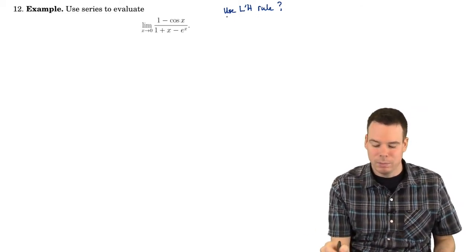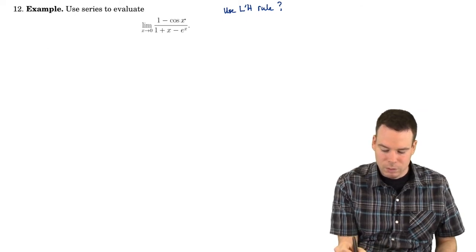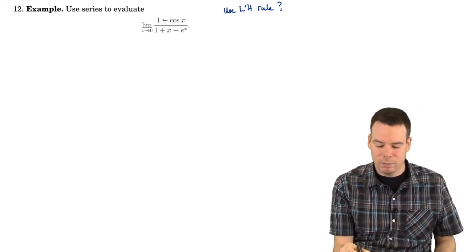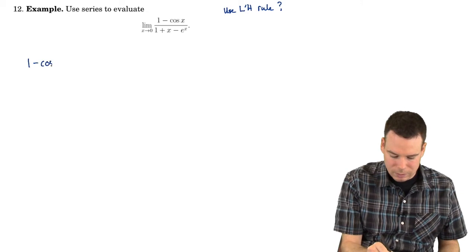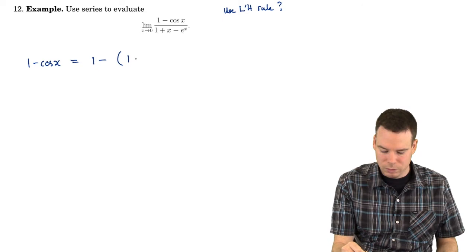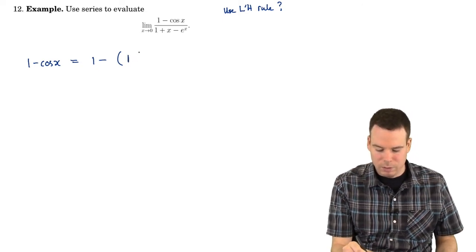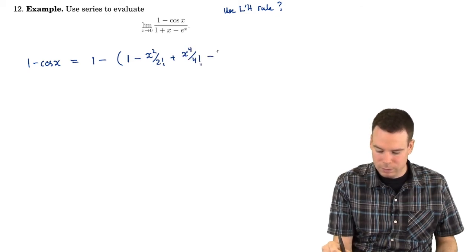There is a nice, neat connection between L'Hôpital's rule and what we're about to do. The first thing we want to do is use series to represent both the function in the numerator and the function in the denominator. What is the series representation of the numerator? That's 1 minus the cosine function. The cosine function is the power series where only the even powers survive: 1 minus x squared over 2 factorial plus x to the 4th over 4 factorial minus x to the 6th over 6 factorial plus...